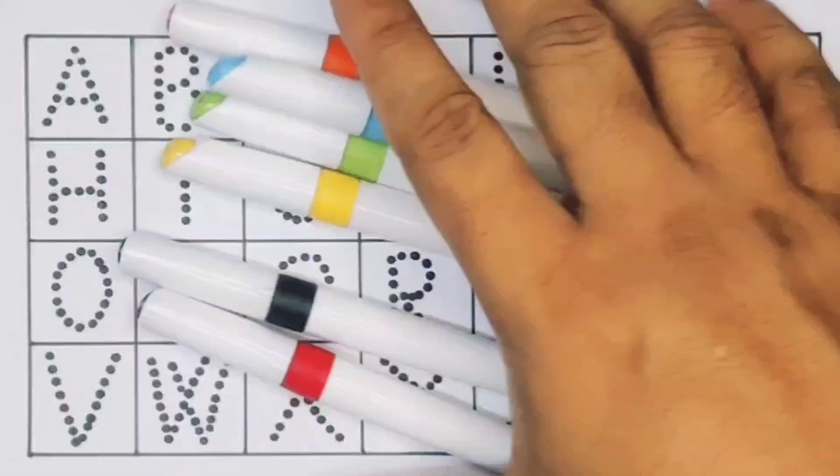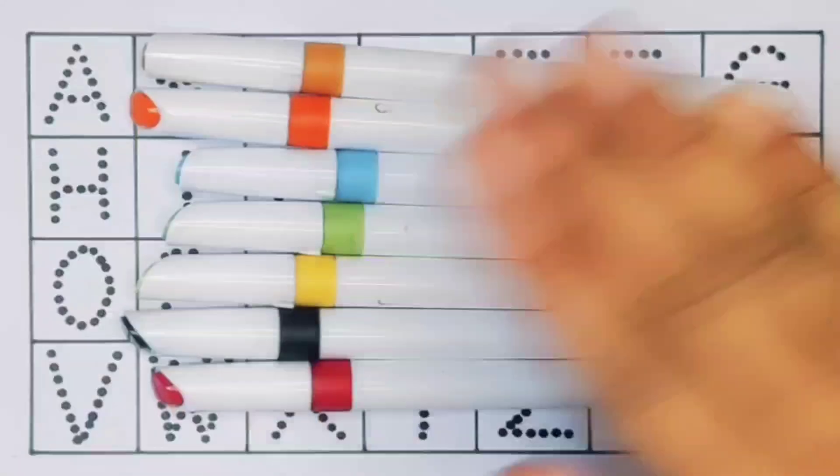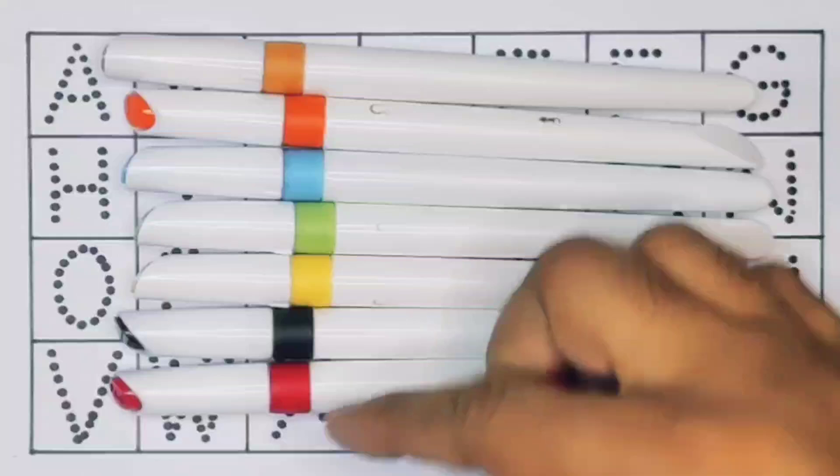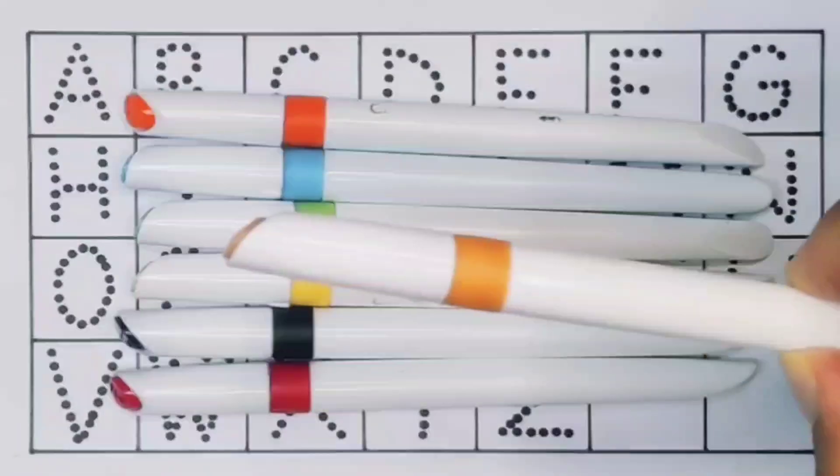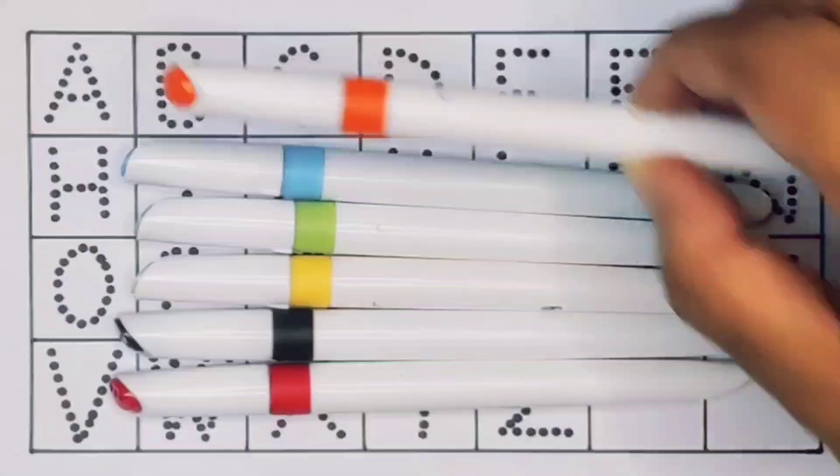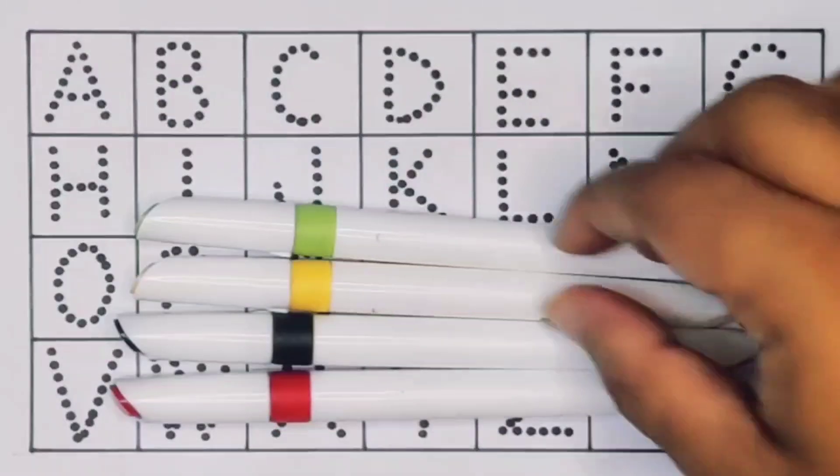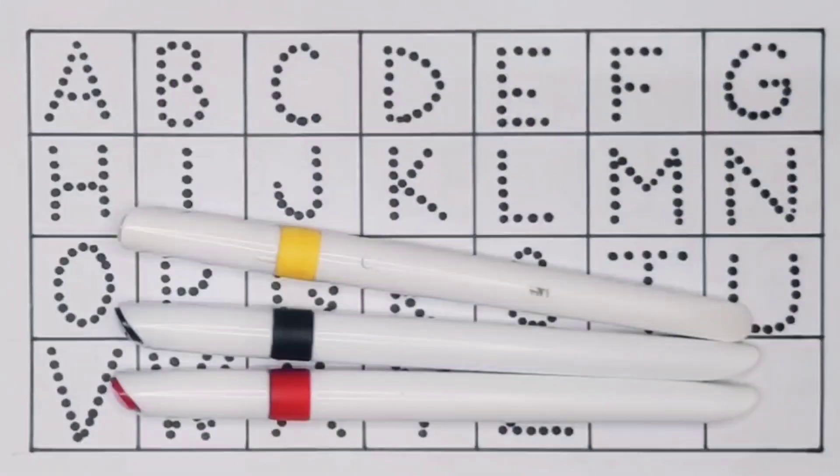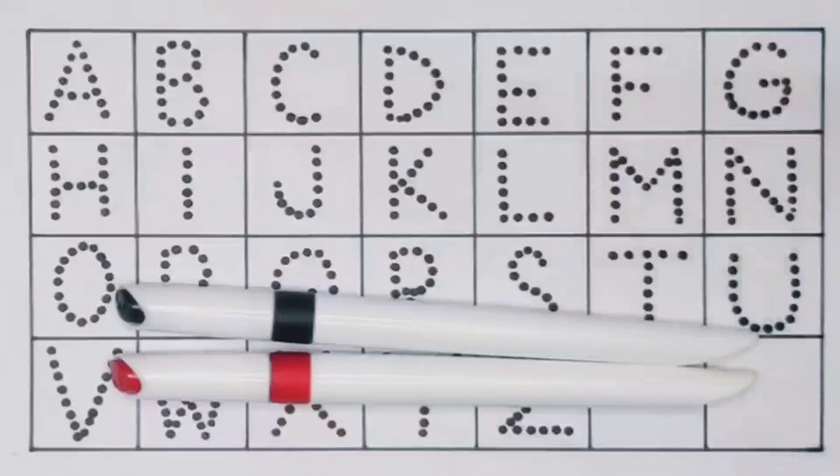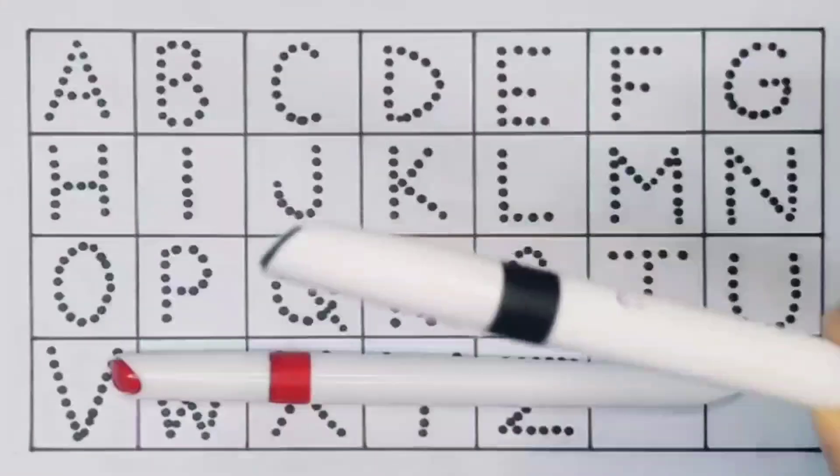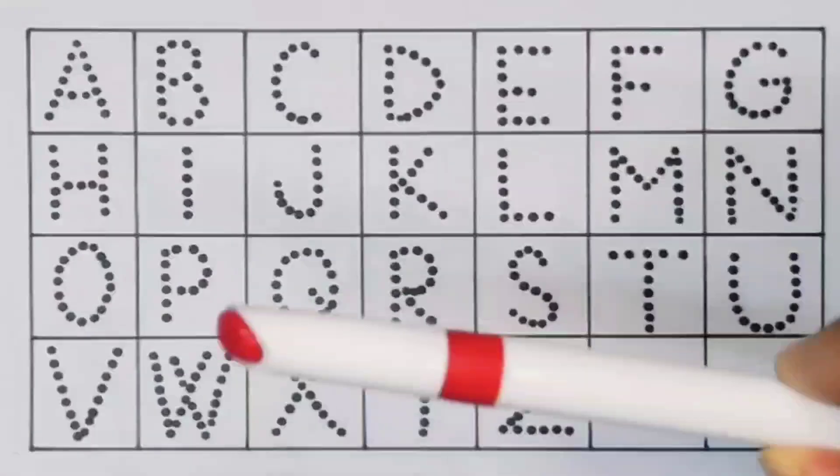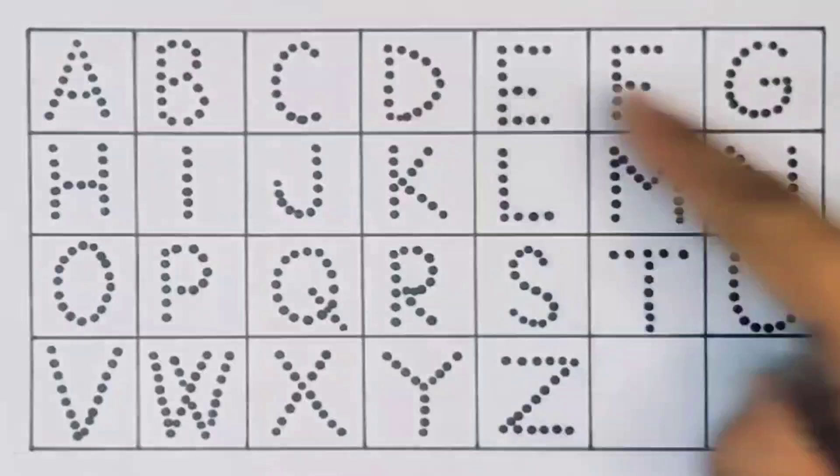Hello kids, welcome to my new video. First we're going to know the color's name: brown color, orange color, sky blue color, light green color, yellow color, black color, red color. Now let's learn the alphabet A.